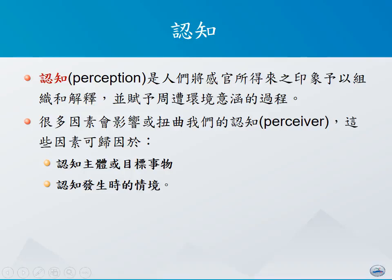所谓的认知，它所泛指的就是人们将感官所得到的印象予以组织跟解释，并赋予周遭的环境意涵的一个过程。在认知的过程当中，有很多的因素会影响到我们个人的认知，这些因素通常可以分成两种：第一种是认知的主体跟目标的事物，第二种是来自于认知时发生的情境。例如刚刚所看到的那段文字，它呈现的是用大写且字母排列错误的方式，对于某些人来讲完全看不懂，那是因为我们的目标事物本身是一个我们并不习惯的方式来呈现。